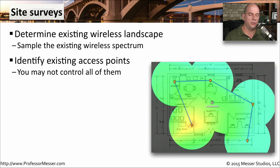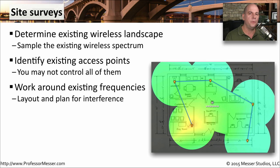There are many different tools you can use to help find all of these different access points. It might be a free piece of software, or something commercial that you can purchase, or you're getting a full-blown spectrum analyzer, and really trying to understand exactly what frequencies are in use at that location. Once you have that information, you can then start determining what particular frequencies are open or available, or which ones are not being used as much. This way, you can plan where you want to put an access point, and then decide what frequencies should be used by that particular access point.